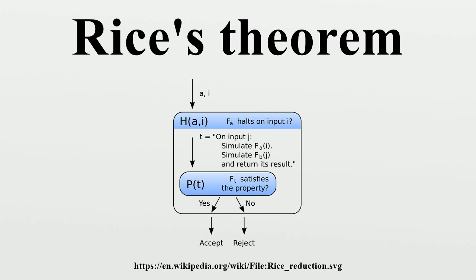Another way of stating Rice's theorem that is more useful in computability theory follows. Let S be a set of languages that is non-trivial, meaning there exists a Turing machine that recognizes a language in S, and there exists a Turing machine that recognizes a language not in S. Then it is undecidable to determine whether the language recognized by an arbitrary Turing machine lies in S.